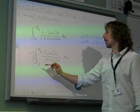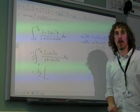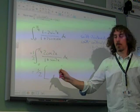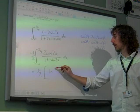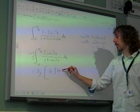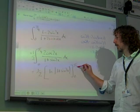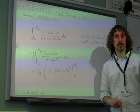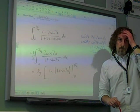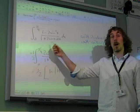So this now becomes equal to a half. The top is the derivative of the bottom, so it's the natural log of the modulus of 1 plus sin 2x between 0 and pi by 4.